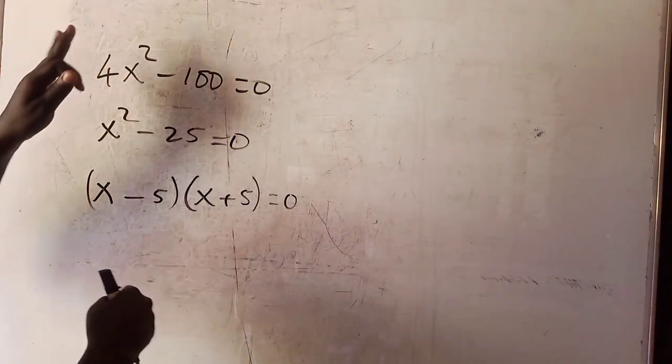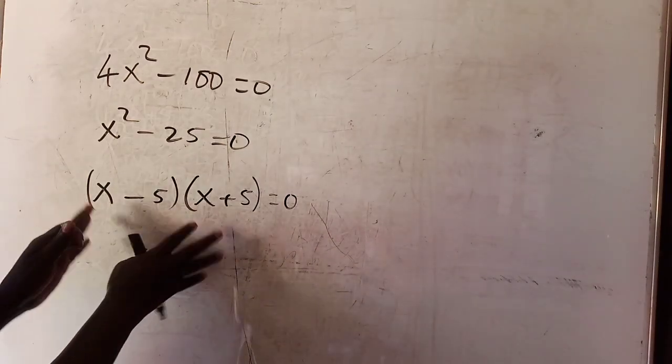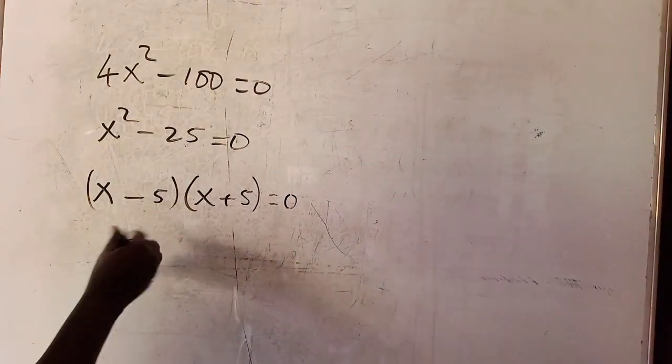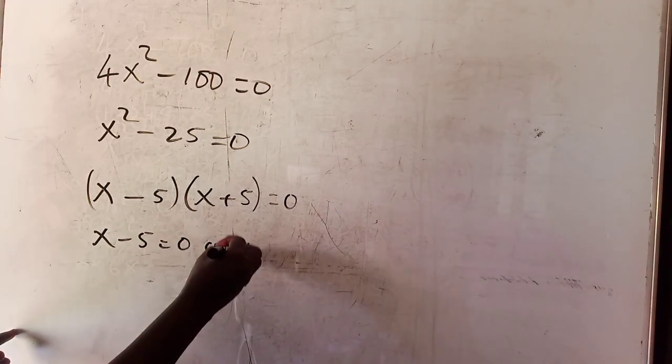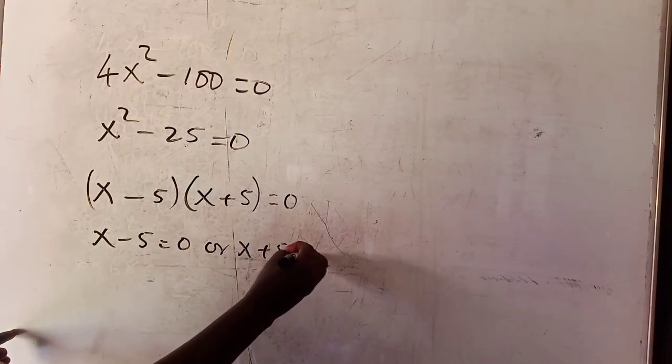The question here is to find the roots. What we do is set either x - 5 = 0 or x + 5 = 0.